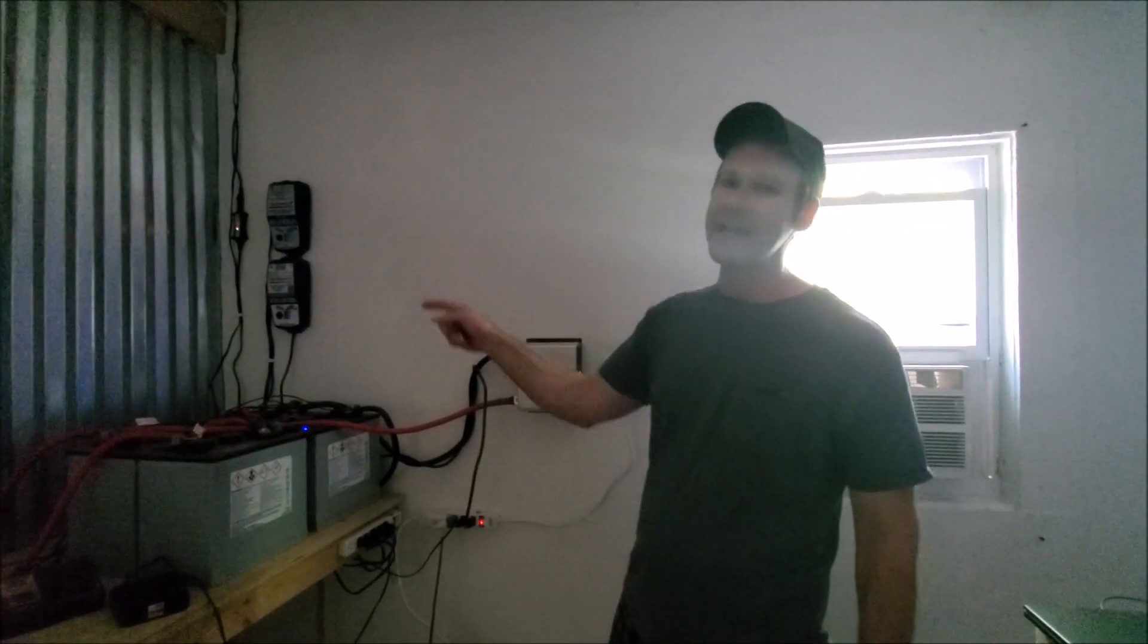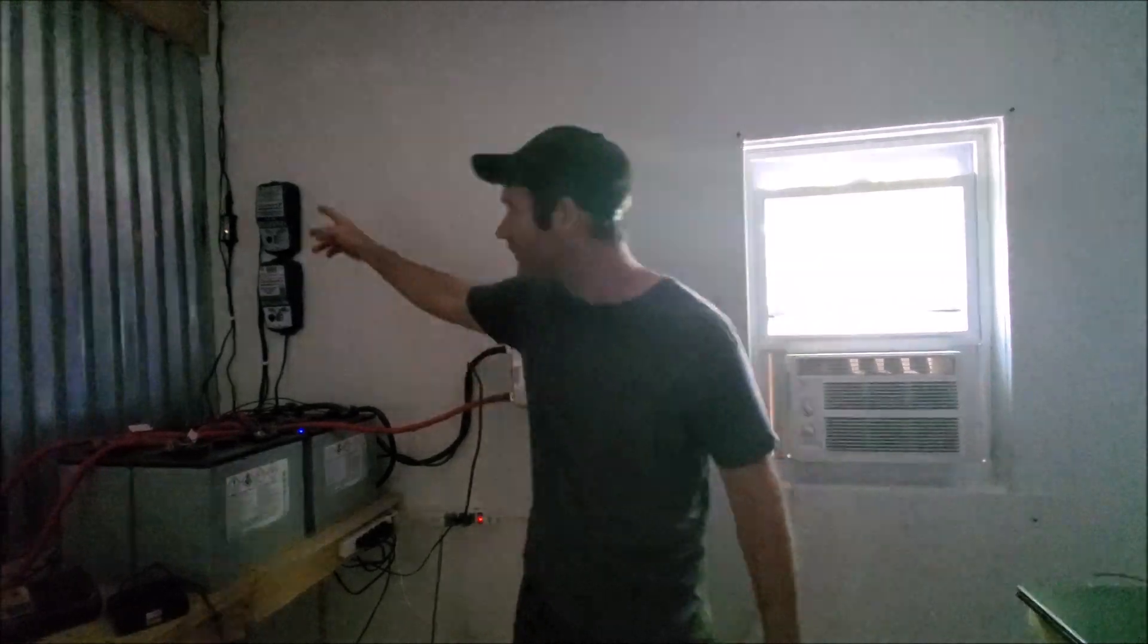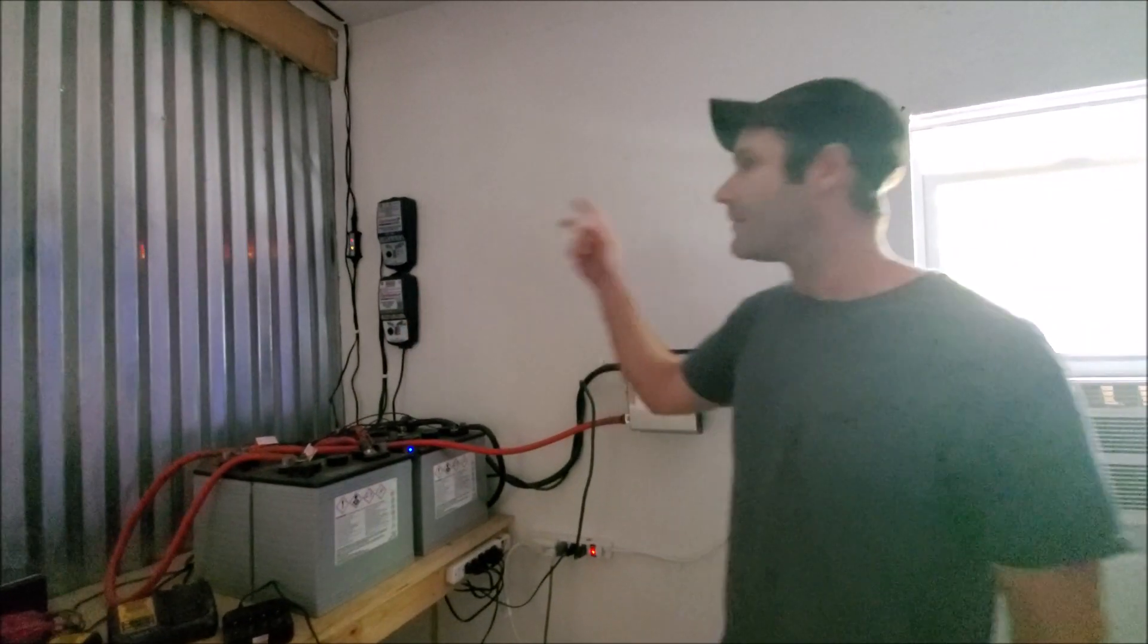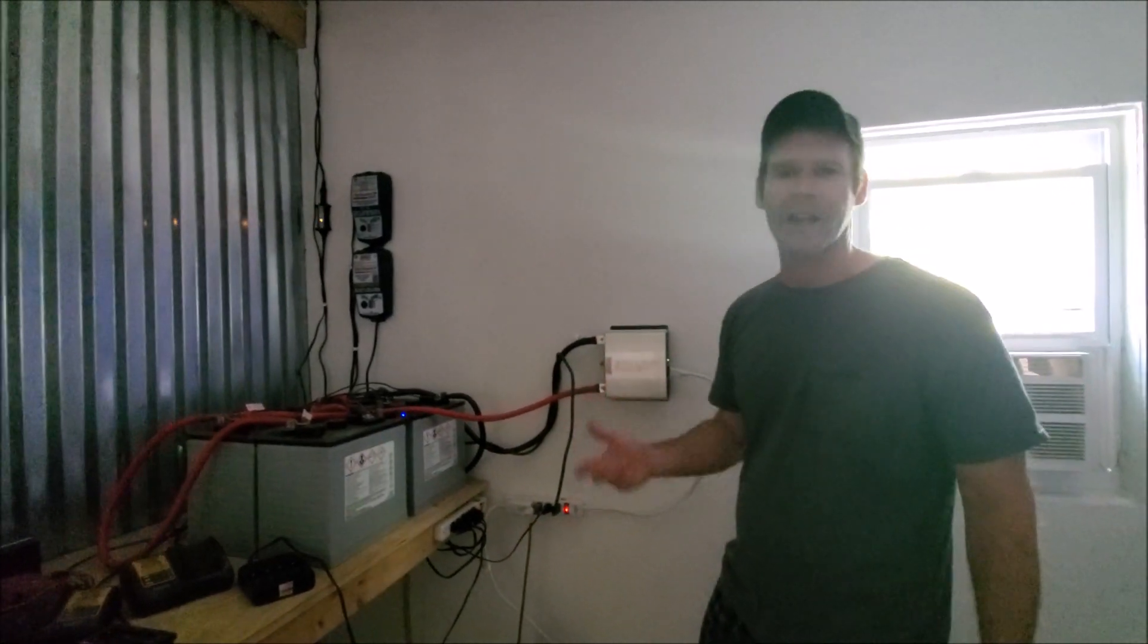Right now, we have totally and completely free air conditioning from two relatively small solar panels. We have one 80-watt solar panel up there, both are Optimate brand, and the other one is 60 watts, so you're talking 140 watts worth of solar panels to run an air conditioner.